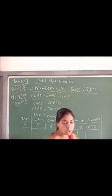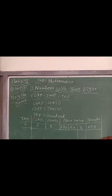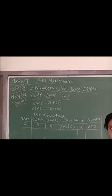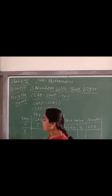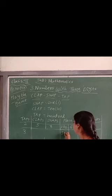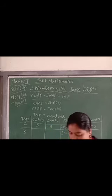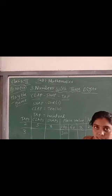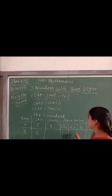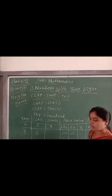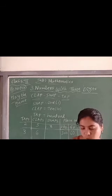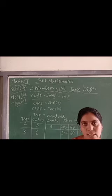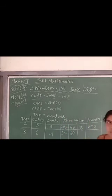I am showing one example — you are only saying the number. One, two, three — three taps means three hundreds. One, two, three, four, five, six — six claps means sixty. One, two, three, four — four snaps means four ones. So the number is three hundred and sixty-four.